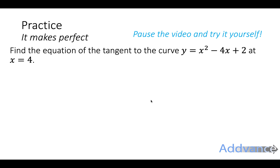Practice: find the equation of the tangent to the curve y = x² − 4x + 2 at the point where x = 4. Pause the video and take as much time as you want. When you're ready, the answers will be revealed.